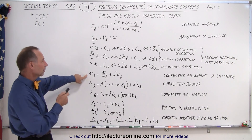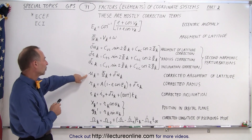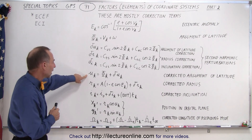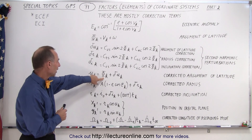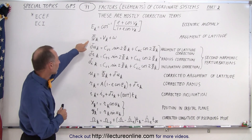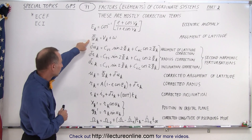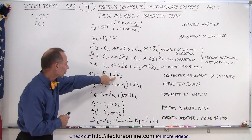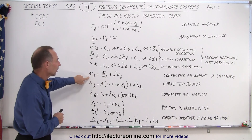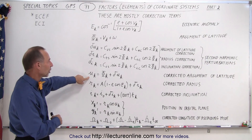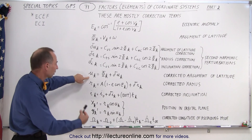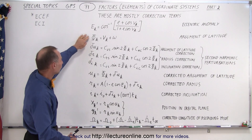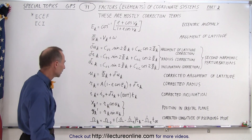We also have a corrected argument of latitude constant here — the corrected value for the angle that's calculated for the argument of latitude. We then add a small delta to come up with what we call the corrected argument of latitude, which is an improvement over the initial value.